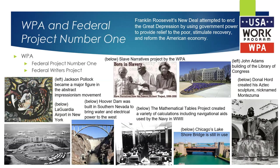For the later part of the New Deal, the Works Progress Administration focused on various infrastructure initiatives such as roads, airports, parks, and schools. They built more than 4,000 new school buildings, erected 130 new hospitals, laid roughly 9,000 miles of storm drains and sanitary sewer lines, built 29,000 new bridges, constructed 150 new airfields, paved or repaired 280,000 miles of roads, and planted 24 million trees. At its peak in 1938, the WPA provided paid jobs for 3 million unemployed men and women, as well as youth in a separate division, the National Youth Administration, or NYA.